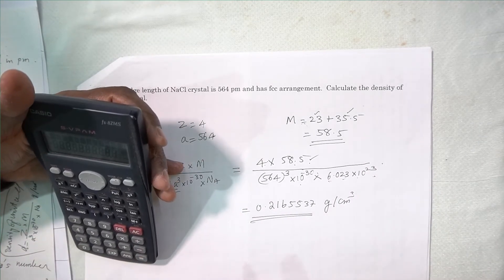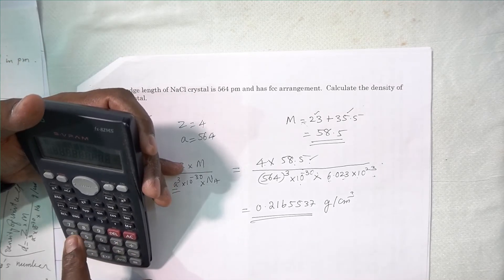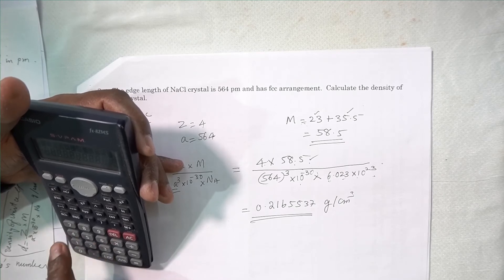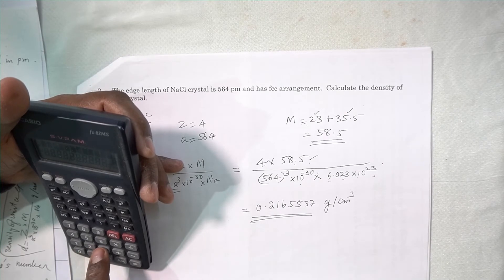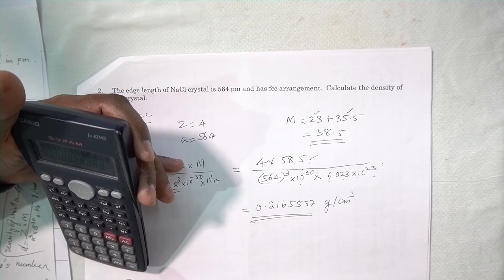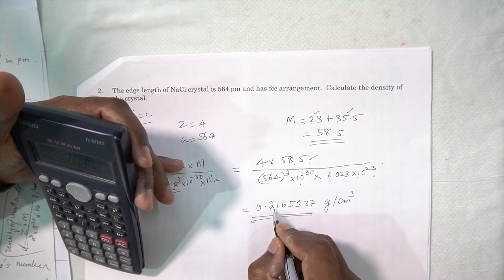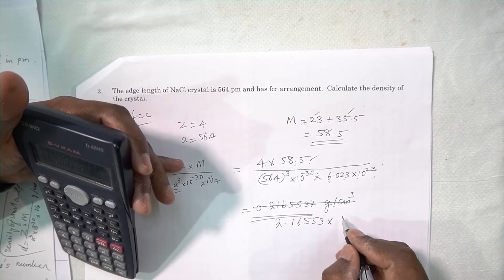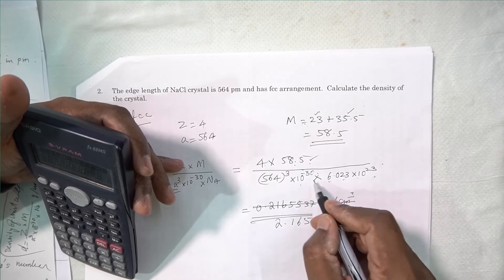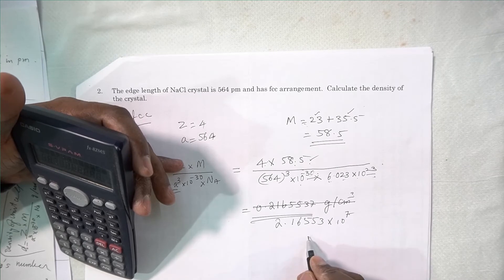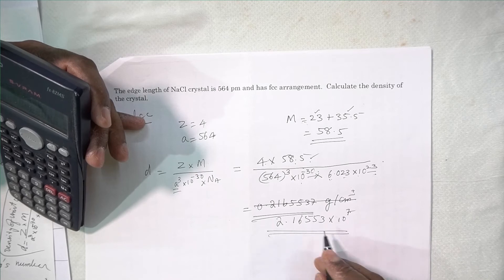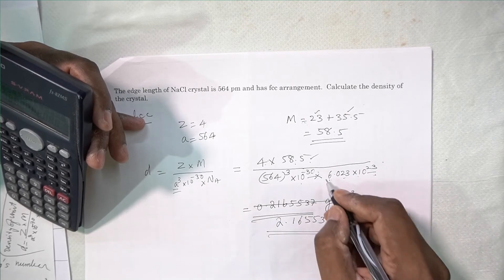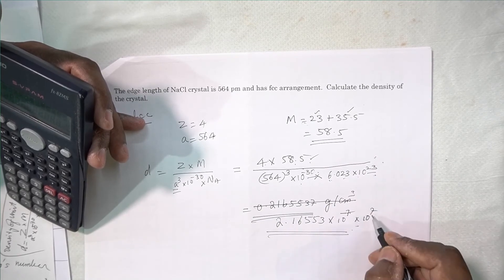Putting all values in the calculator: 4 into 58.5 divided by 564 cubed into 6.023. You get the value 2.16553 into 10 to the power 7 from the numerator calculation. The 10 to the power 7 comes from the difference in powers — 10 to the power 30 and 10 to the power minus 23 — which together give 10 to the power 7.